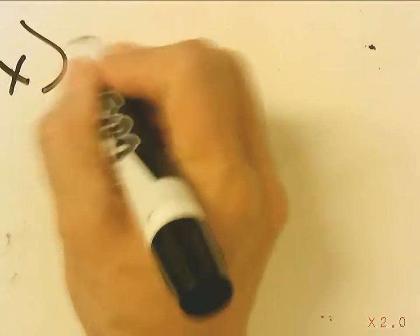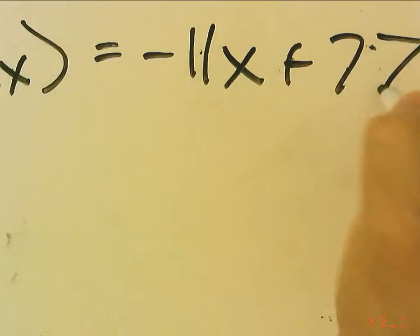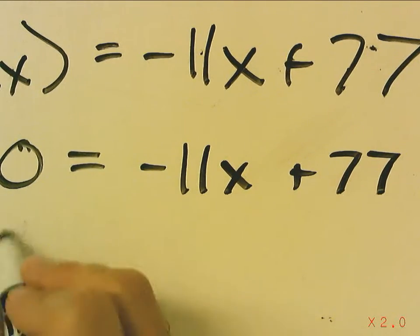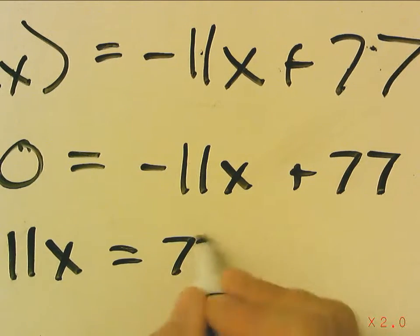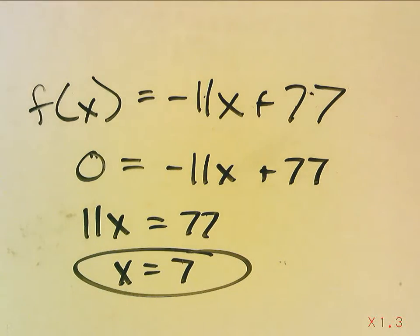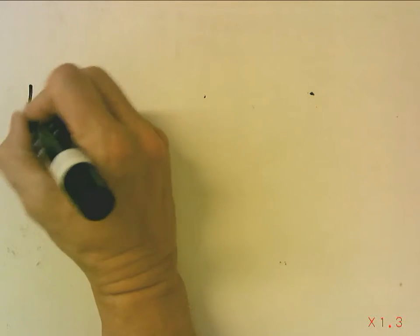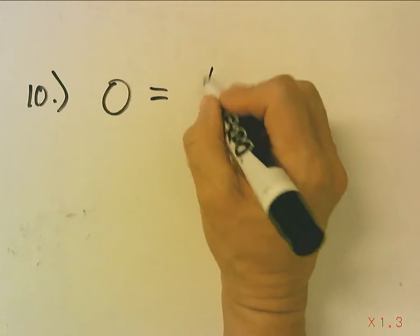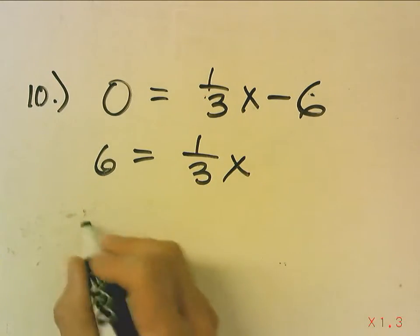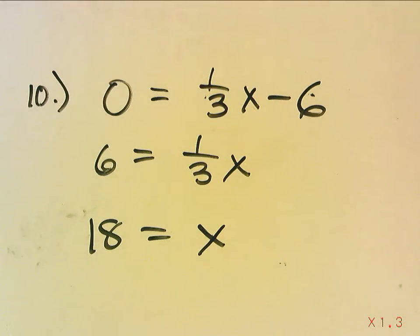For number 9, if it's asking you to find the zero of a function, that does not mean let x equal 0 — it means let f(x) equal 0. You're finding the x-intercept. So 11x equals 77, and x equals 7. For number 10, again let f(x) equal 0: 6 equals 1 third x. Multiply both sides by 3, and x equals 18.